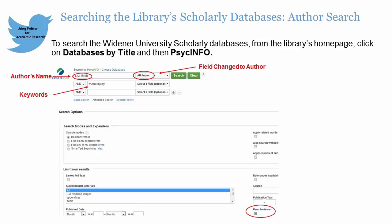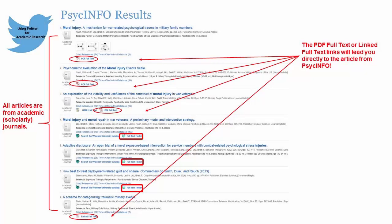Search the Widener University scholarly databases to discover what additional articles Brett Litz has published about moral injury. The previous article showed that both of these authors are involved in mental health care, so you should search PsychInfo, the psychology database. To search this database, start at the library's homepage and click on Databases by Title, and then select the database PsychInfo. In the PsychInfo search box, search for the author Litz, Brett by changing the field of the first box to Author, and then add the keywords Moral Injury in the second box. Always limit to peer-reviewed to ensure that you obtain only scholarly articles. PsychInfo features seven articles by Brett Litz that include the term Moral Injury. To obtain the full text, click on the PDF full text or linked full text icons directly from the database record.